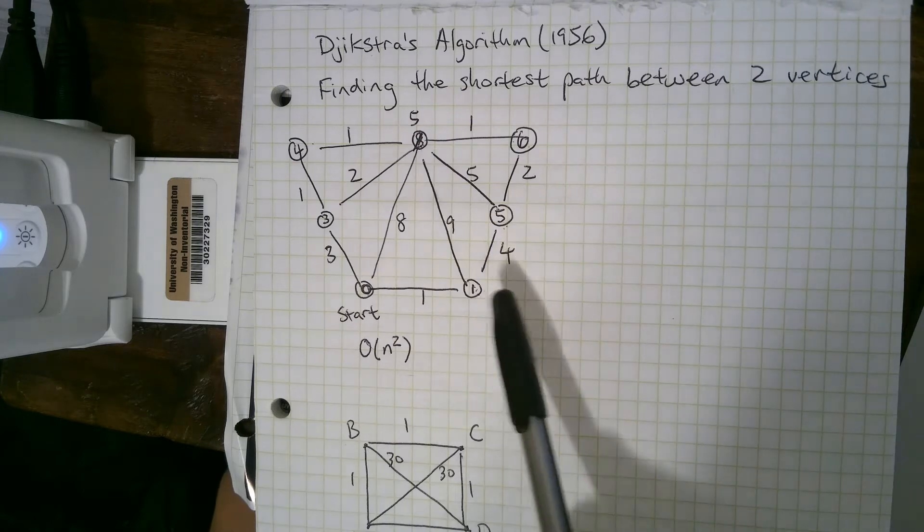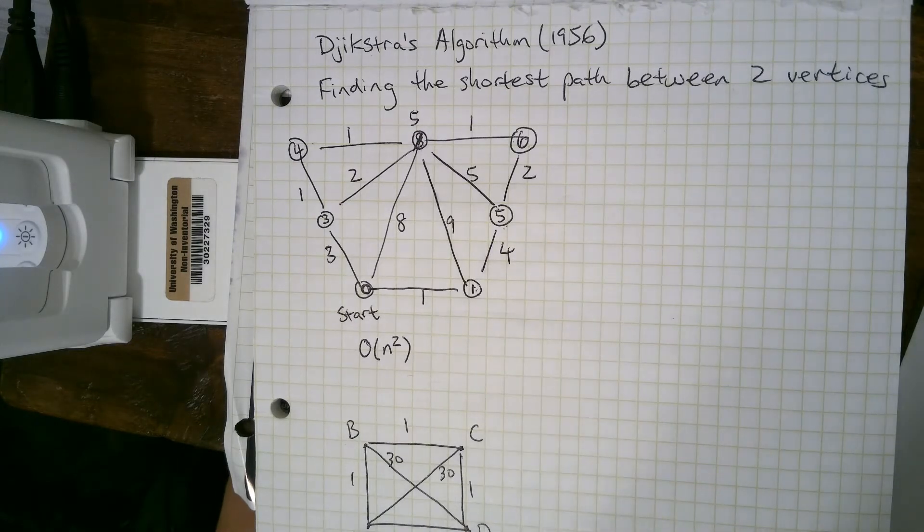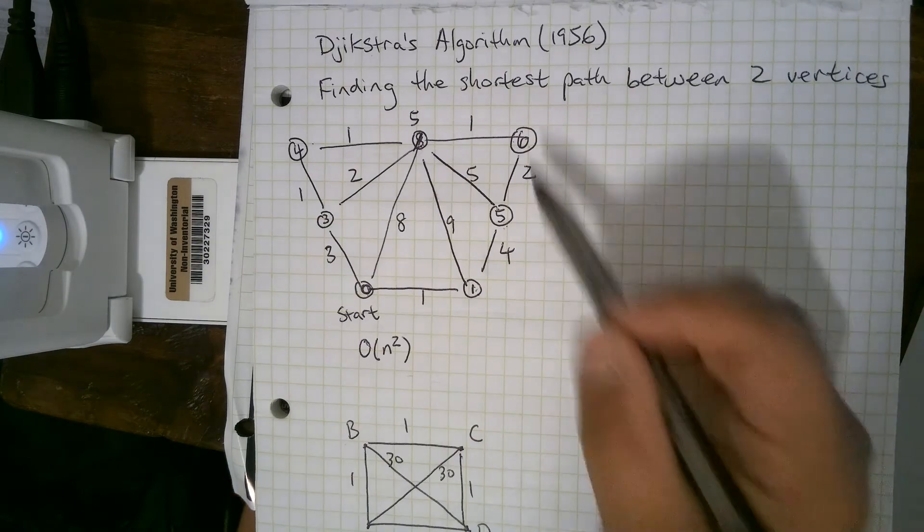And also it looks like this is applicable to the traveling salesman problem. It has a similar feel. But actually this is way easier than the traveling salesman problem. It finds the shortest path between two vertices.